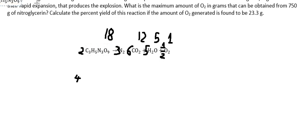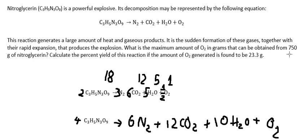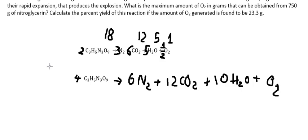After multiplying both sides by four, this one we have number six, this one we have number 12, this one we have number 10, and this one we have number one. We can write the balanced equation like this. The question states they obtained about 750 grams of nitroglycerin.